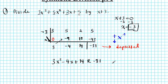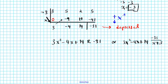Or you can write it as, you can write it as 3x² - 4x + 14, negative 31 over what you are dividing by which is x + 3. So that's equally effective. Alright, let's do another example.